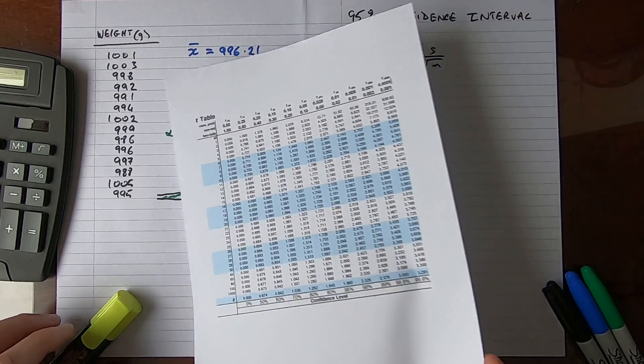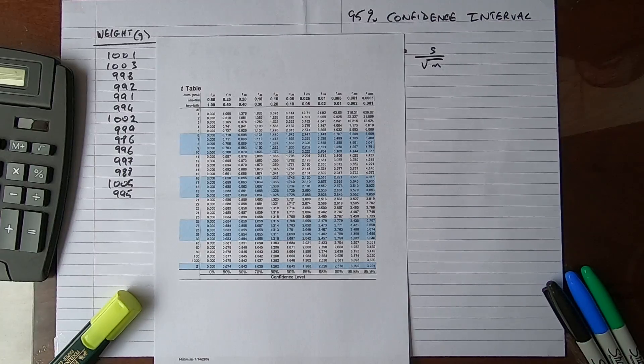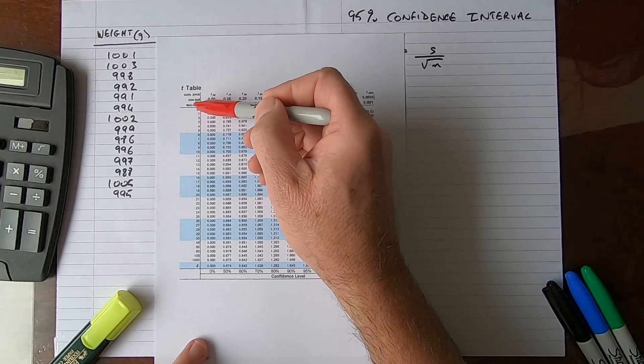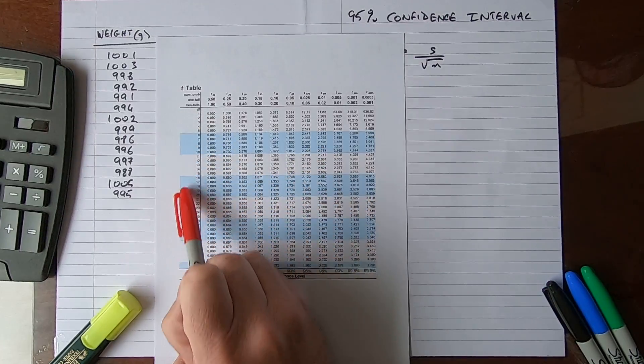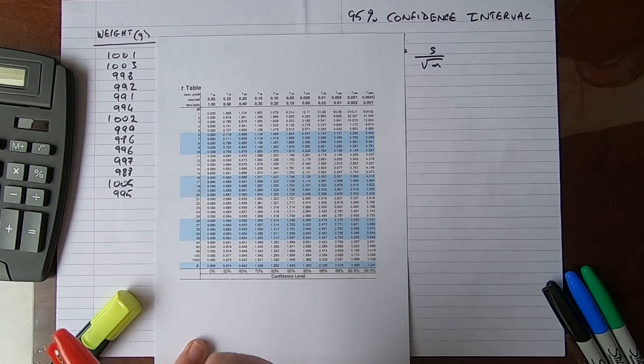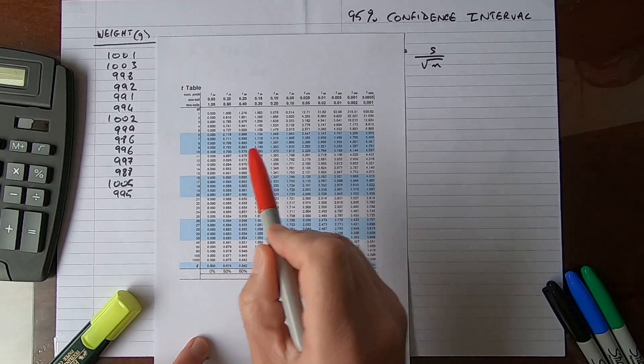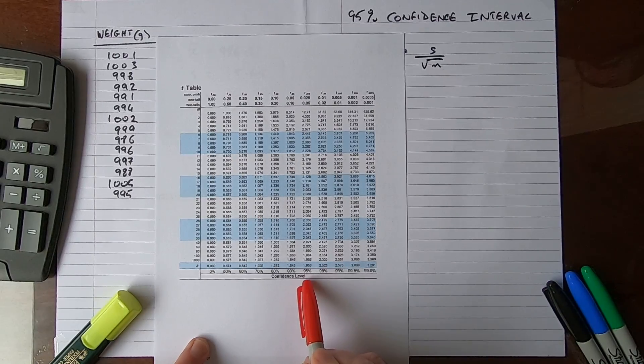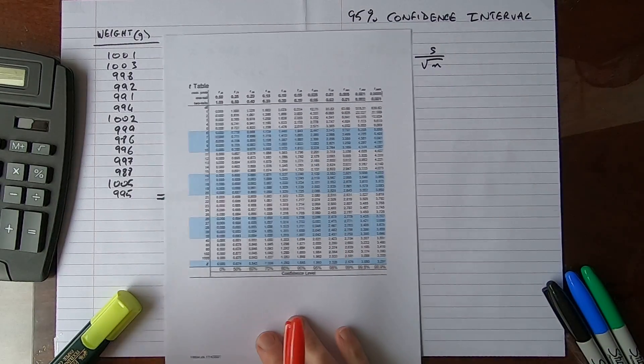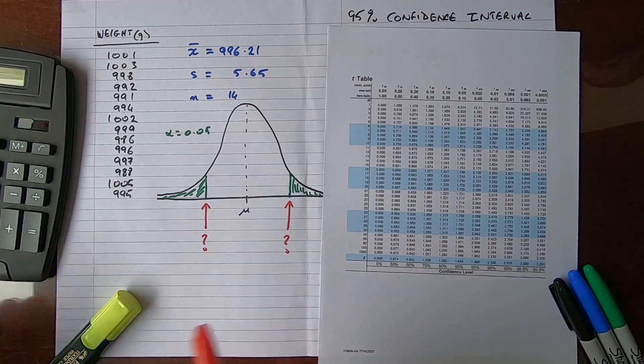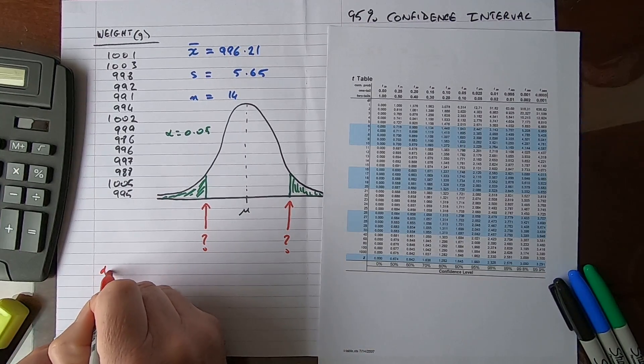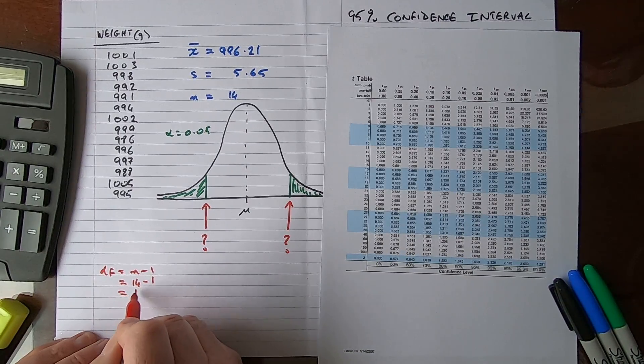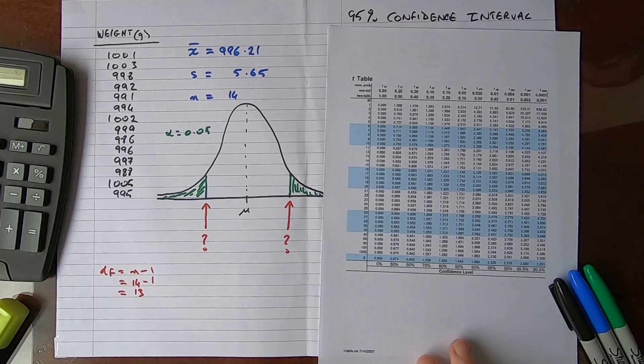These are t tables, widely available online. There's two things we need to know: the row based on DF degrees of freedom, and the confidence level. We're doing it at 95% or a value of 0.05. The degrees of freedom equals n minus 1, which in our case is 14 minus 1, which equals 13. So we have 13 degrees of freedom.